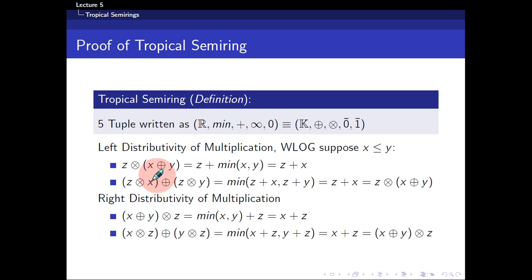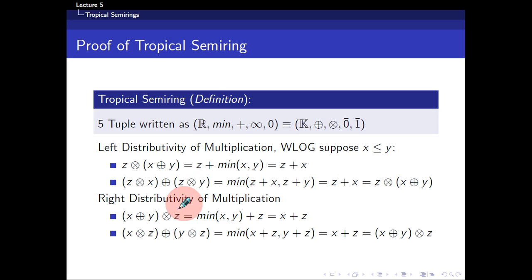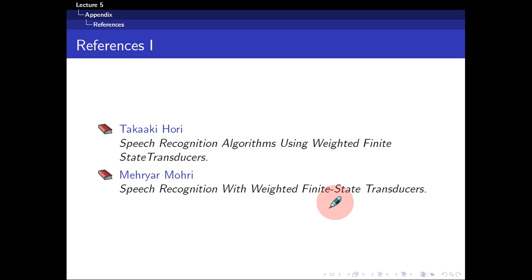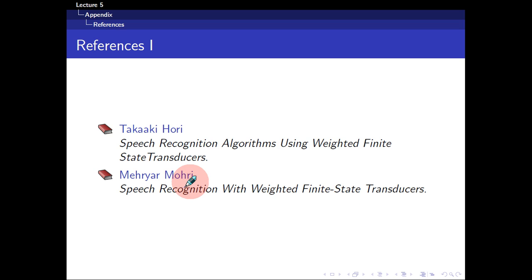A smarter way to do this is to notice that since the multiplication operator is classical addition, it's actually commutative. This means you can flip the terms and essentially show right distributivity directly from left distributivity using the commutative property of classical addition. I hope you've understood this simple proof of the tropical semi-ring. You can go to these two books for additional information: 'Speech Recognition Algorithms Using Weighted Finite State Transducers' by Takahashi Hori, and 'Speech Recognition with Weighted Finite State Transducers' by Mohri. If you enjoyed this lecture, I hope to see you again.